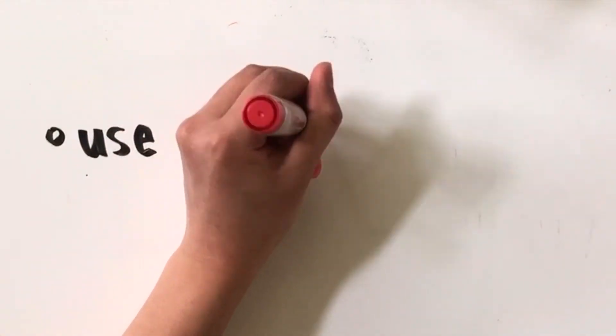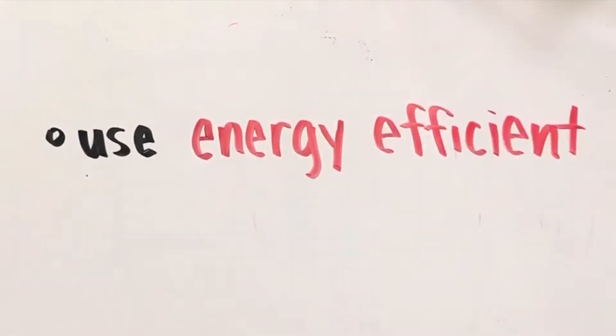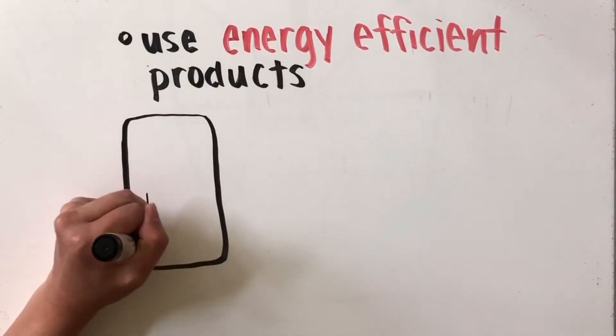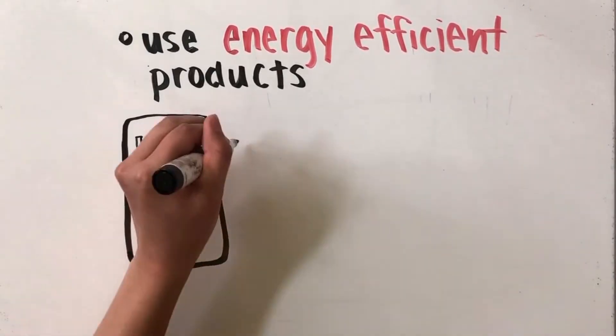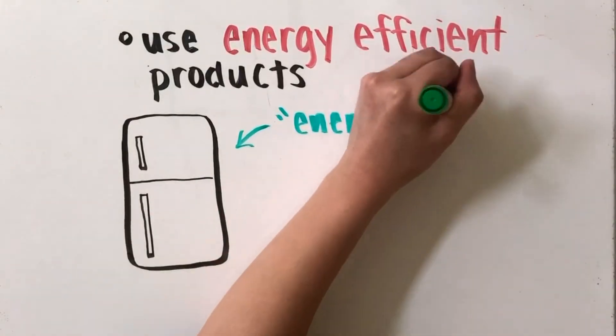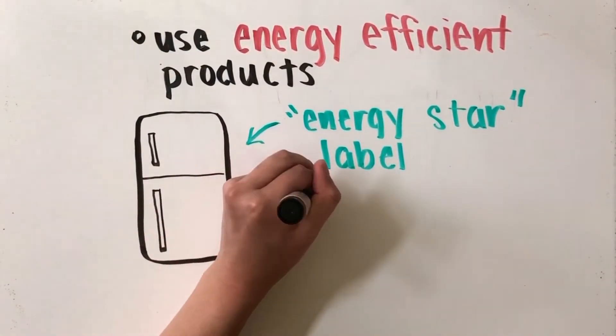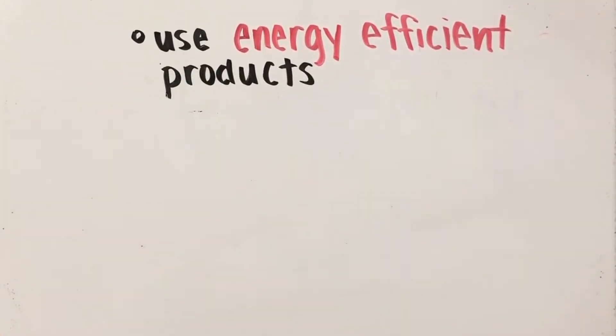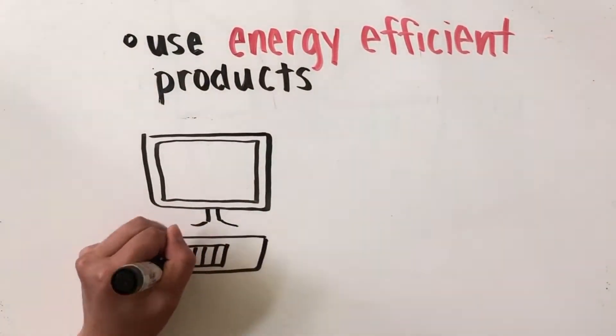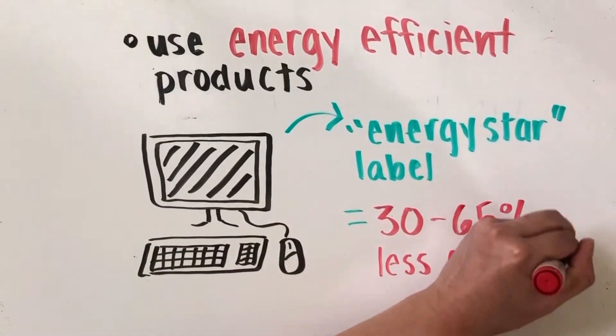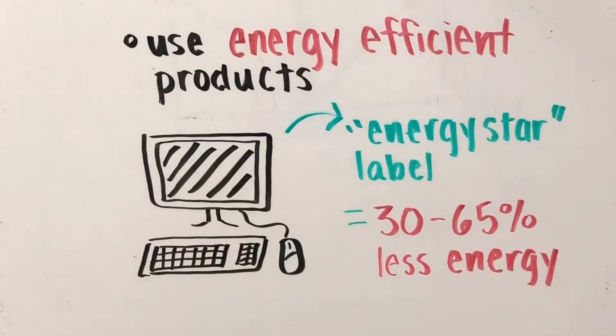The first tip is to use energy-efficient products. Energy efficiency means using less energy to do the exact same task. When shopping for new appliances, look for the Energy Star label. This means that it exceeds the federal minimum standards for energy efficiency. It'll work great for conserving energy in the long run. Investing in a computer with the Energy Star label allows you to use 30 to 65% less energy during your use of a computer.